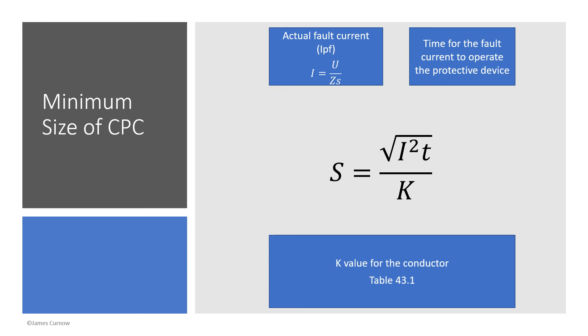The time for the fault current to operate the protected device is found in the time curve chart for that protected device. The K value for the conductor is found in table 43.1, bearing in mind the differences in temperatures for different cables could be 70 degrees or 90 degrees.